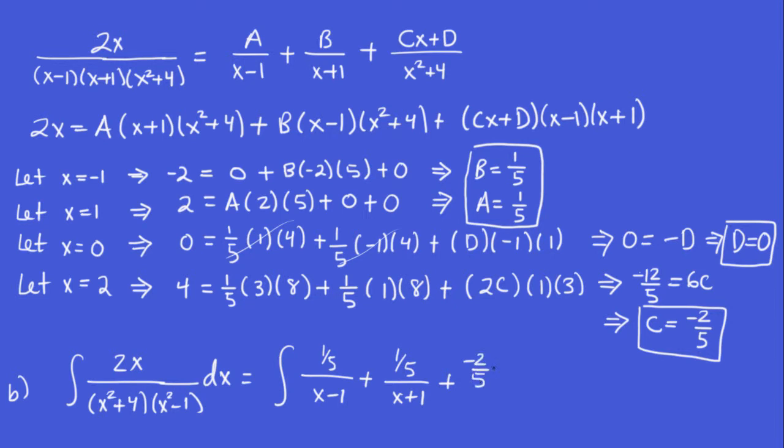plus cx, so minus two fifths x, plus the value of d, which is 0. I won't bother writing that. Over x squared plus 4. And now, really, we've transformed this complicated-looking integral into the sum of three much simpler integrals.